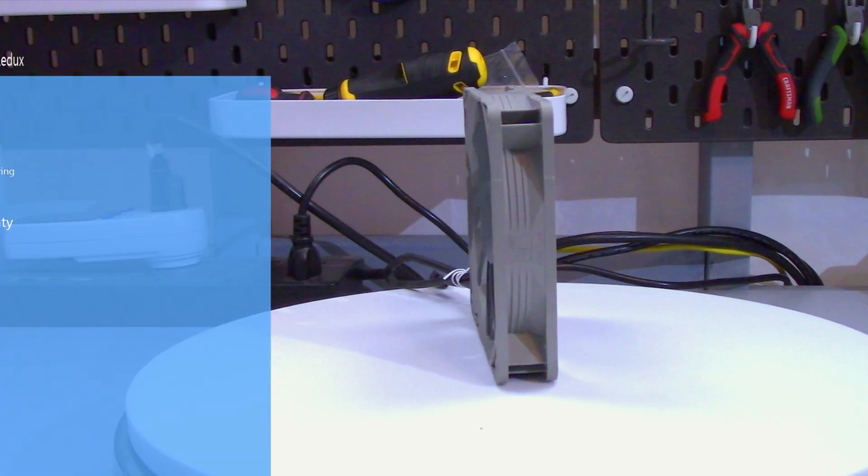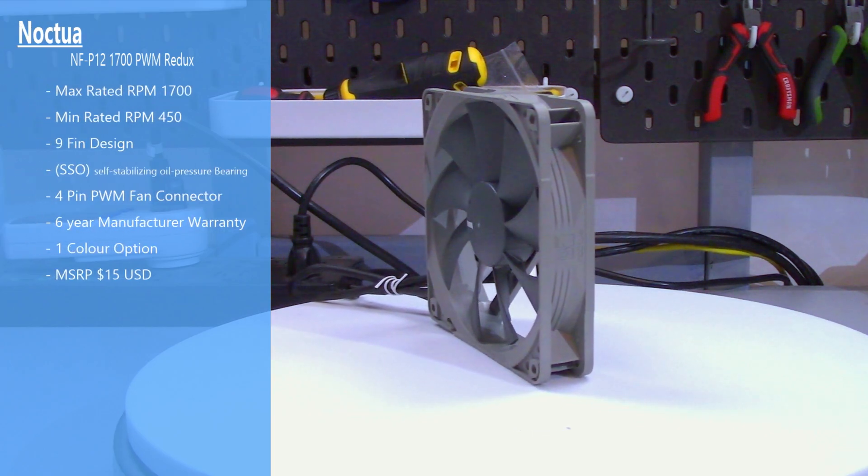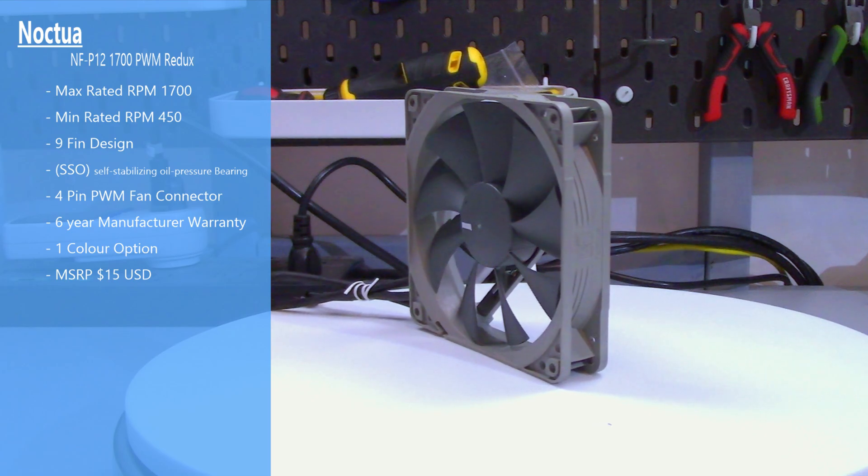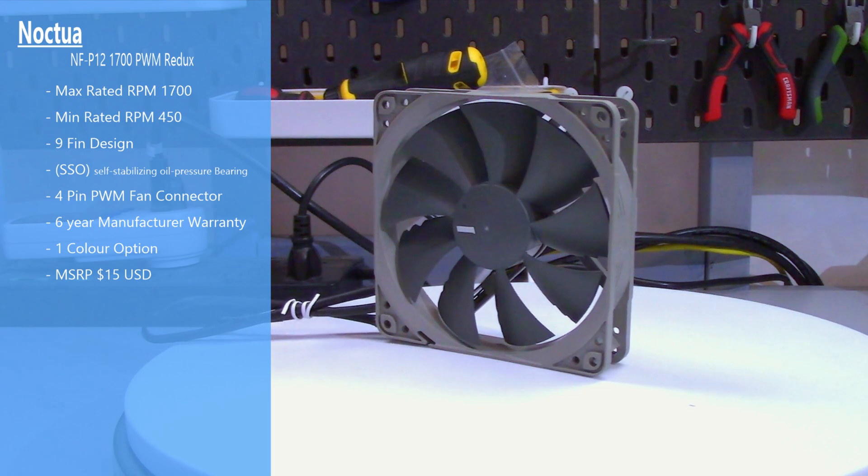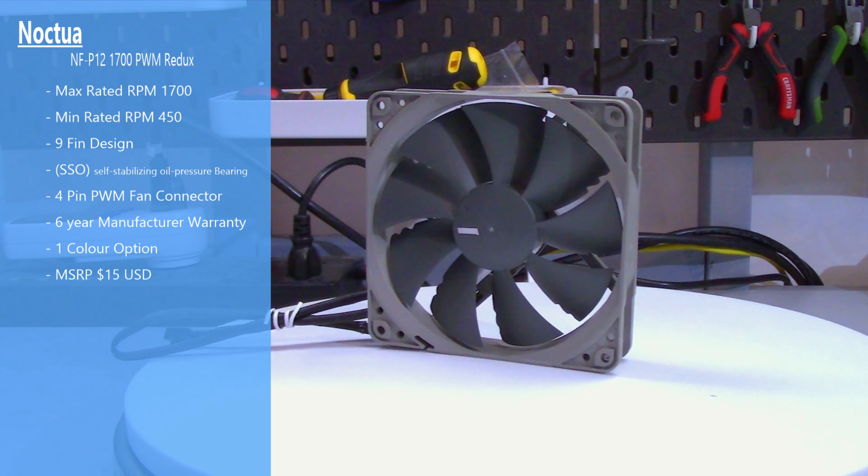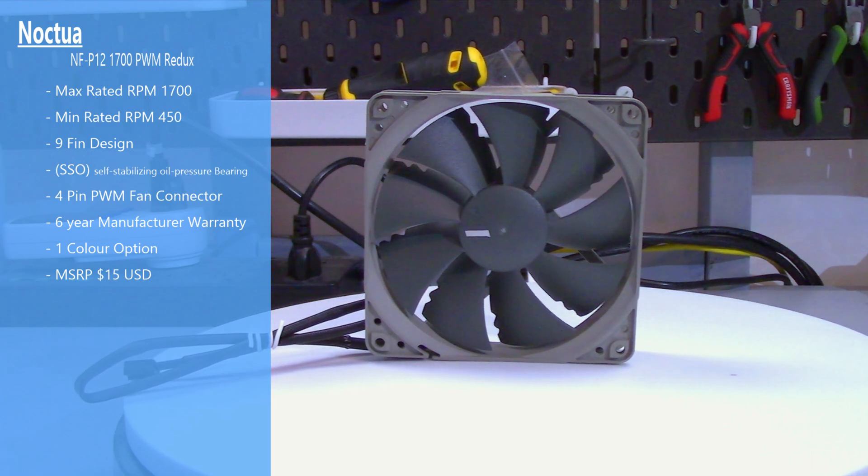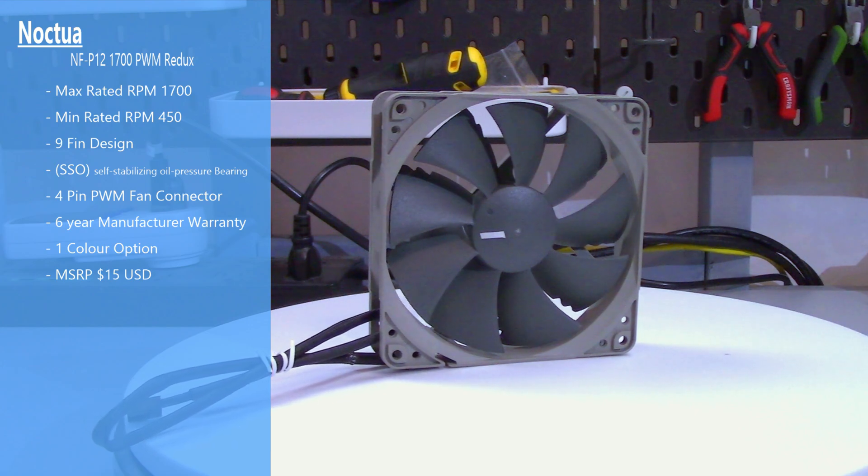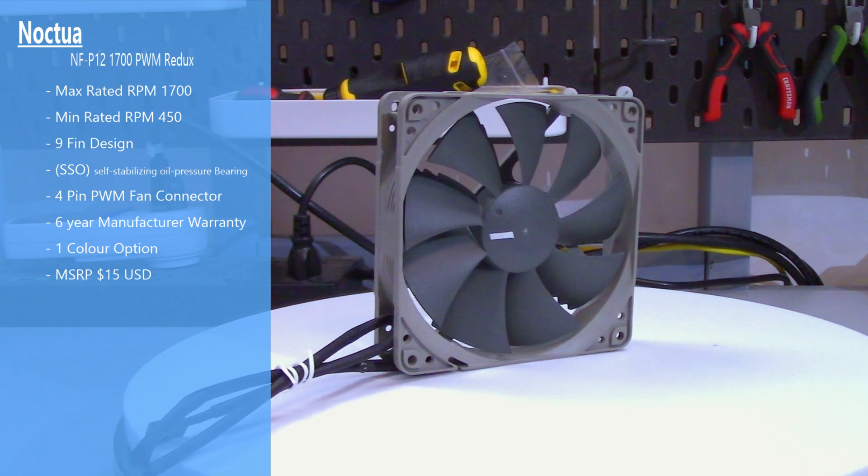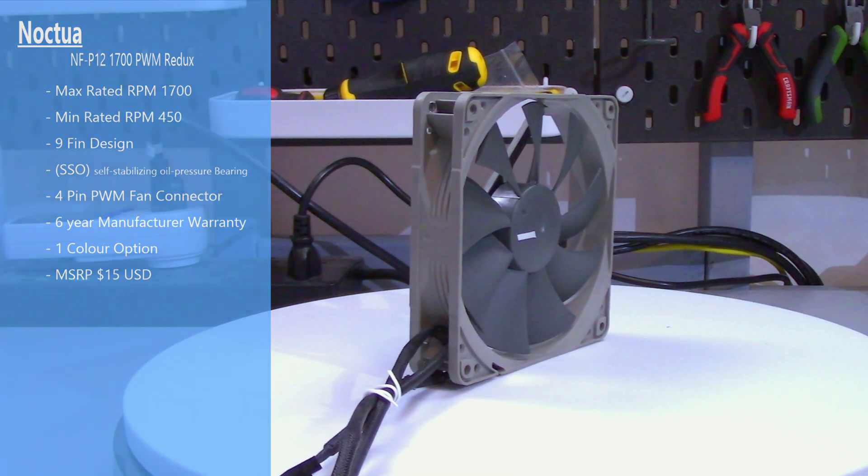Now the fan I tested was the NF-P12 1700 PWM, so it has an RPM of 1700. It has a 9-blade design, an SSO bearing, so that is a self-stabilizing oil pressure bearing, and a 4-pin PWM connector. Noctua provides a 6-year warranty for this fan. There is only one color option, that is the gray on gray, and this fan has an MSRP of 15 USD.